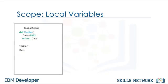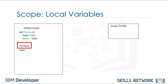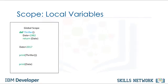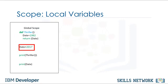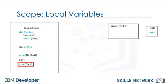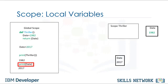Local variables only exist within the scope of a function. Consider the function thriller — the local variable date is set to 1982. When we call the function, we create a new scope; within that scope, the value of date is set to 1982. The value of date does not exist within the global scope. Variables inside the global scope can have the same name as variables in the local scope with no conflict. If the global variable date is set to 2017, calling the function returns the local scope value of 1982, while printing in the global scope uses the global variable value of 2017.